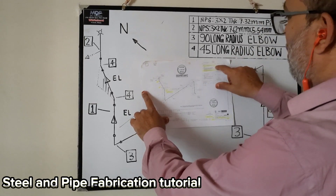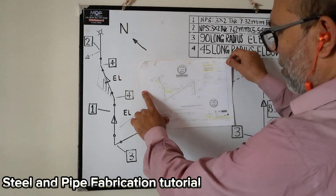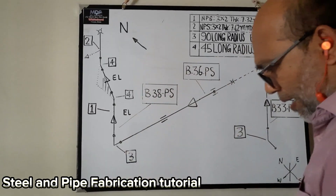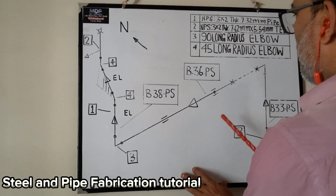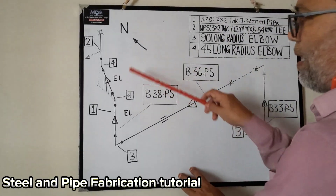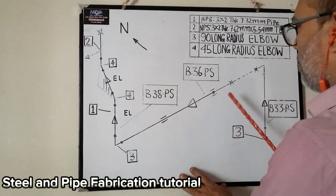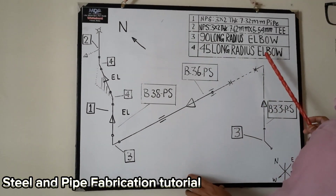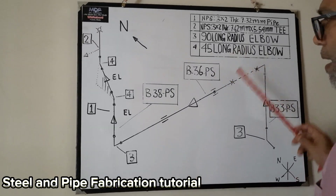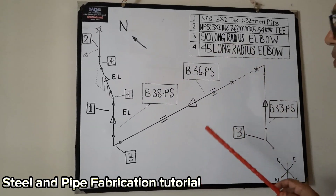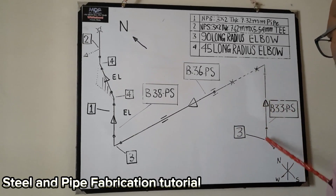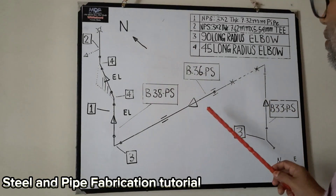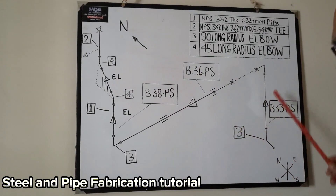This is a very small sheet, so it's difficult to show. That's why I try to draw in my board the same single line isometric pipeline drawing, to explain here on my board how we fabricate if we get a single line pipeline drawing.